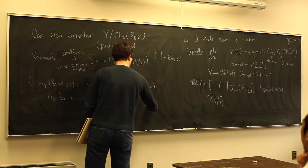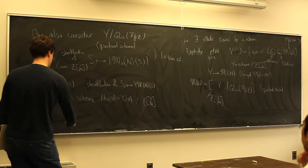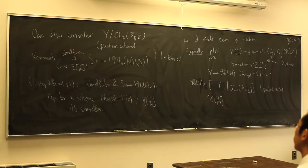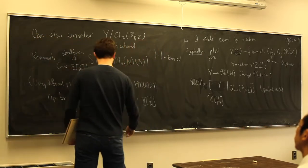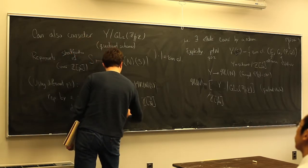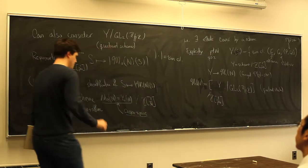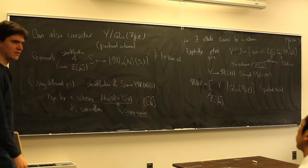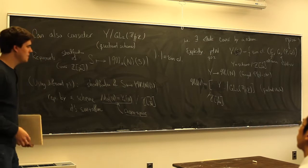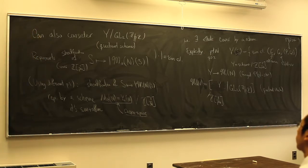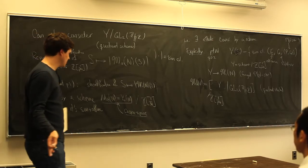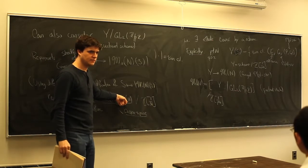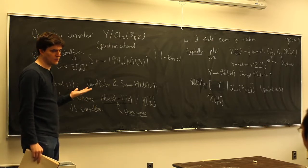The coarse space is nice because it's a scheme instead of a stack — a more concrete object. They have the same points over an algebraically closed field: the set of isomorphism classes over an algebraically closed field is the set of points of the coarse space. But the problem with the coarse space is that there's no universal family over it, which is why we want to use stacks in the first place.